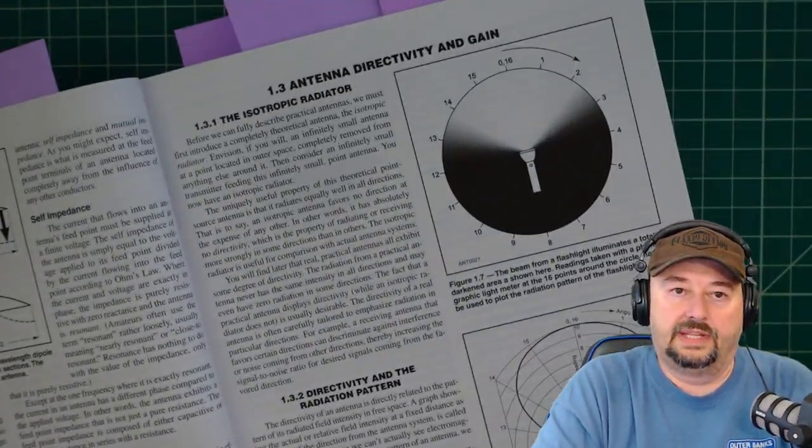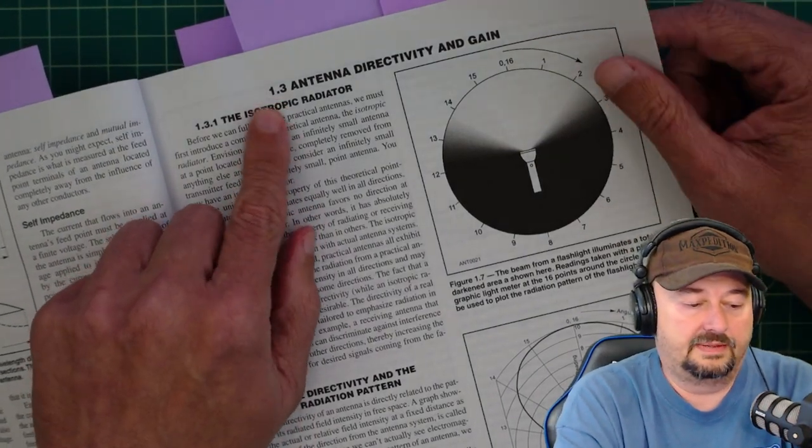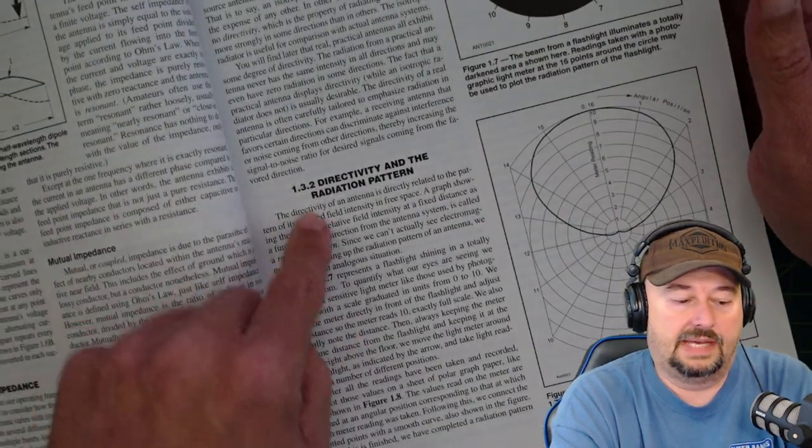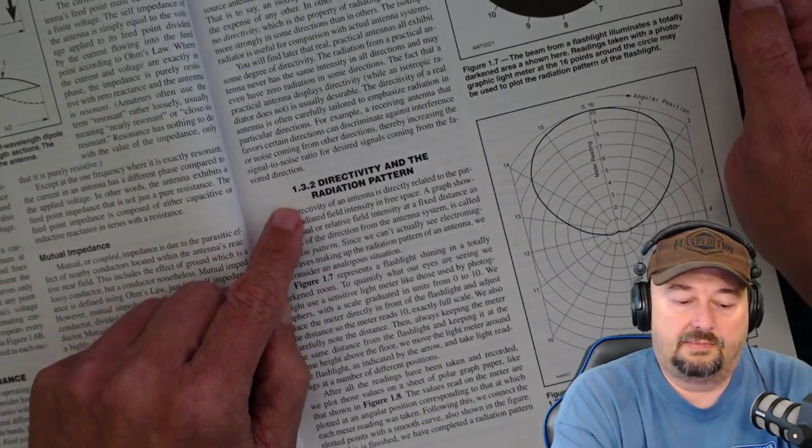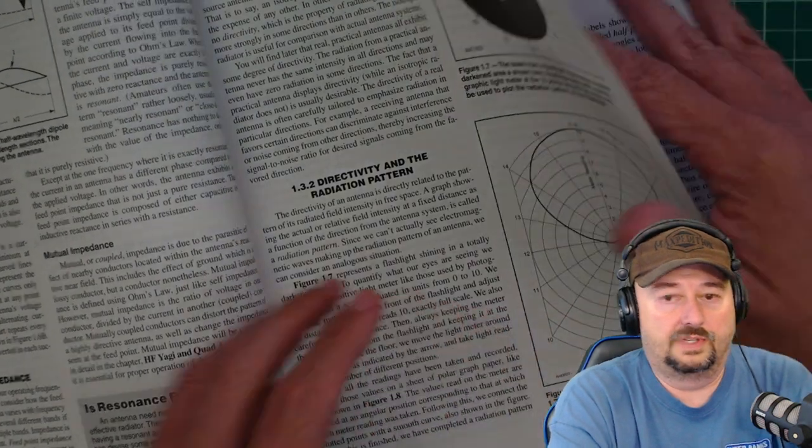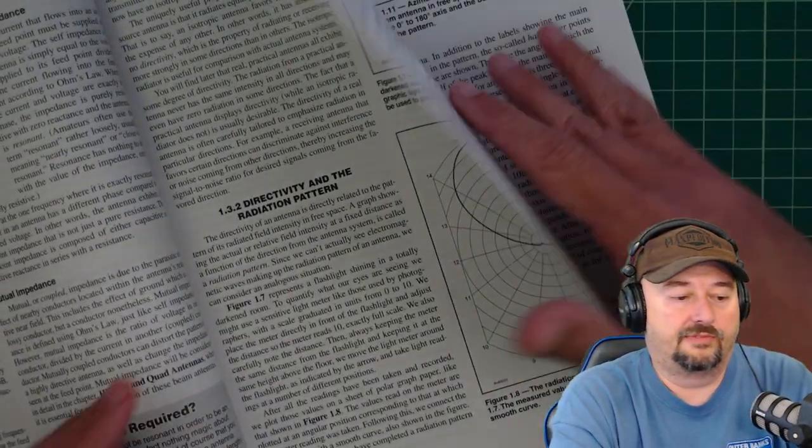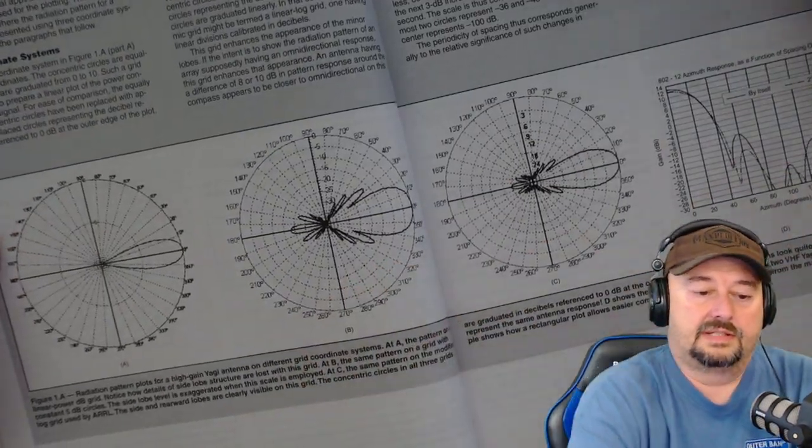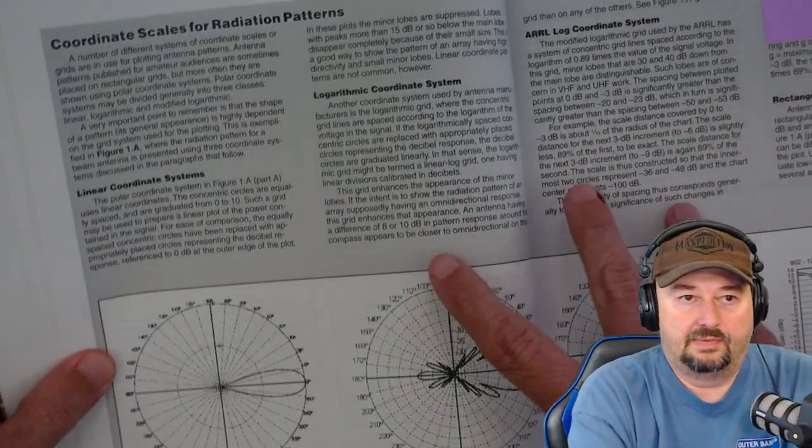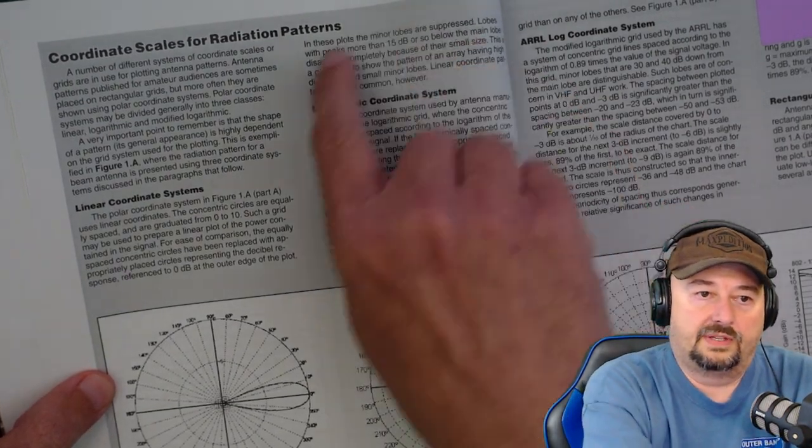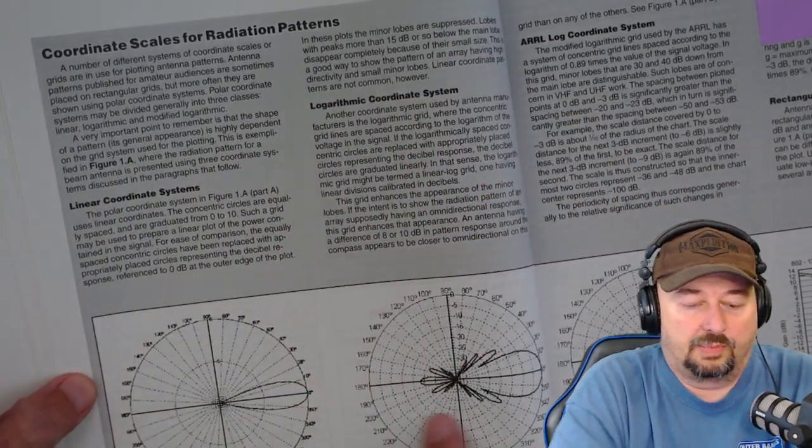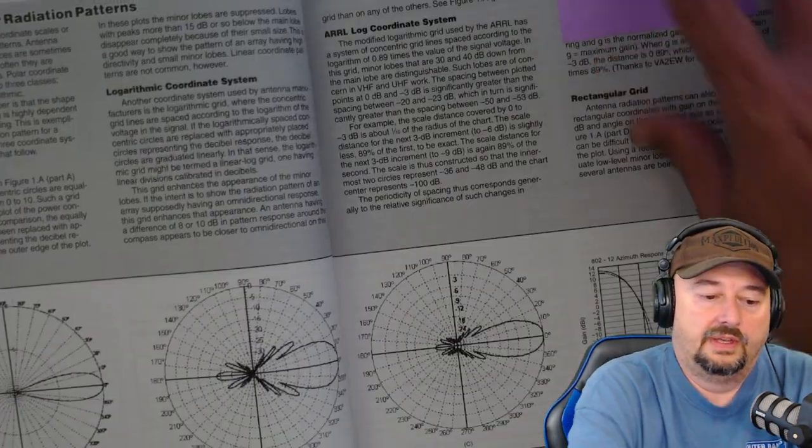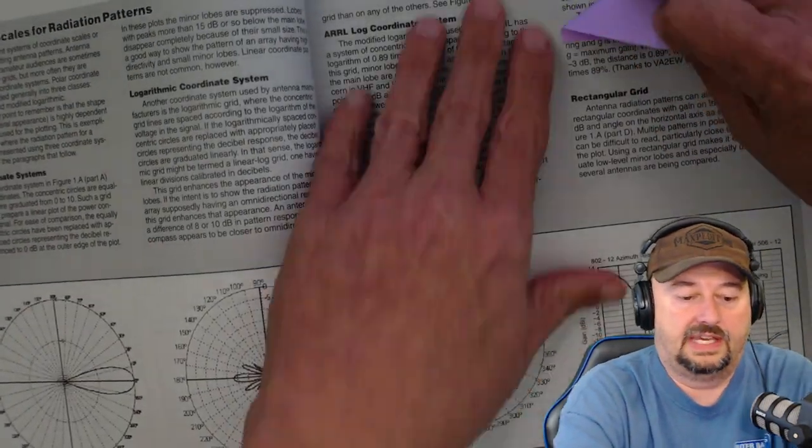And then there's a nice section on directivity and gain, and it talks about how you can look at radiation patterns and how to read them. So it's really, really good at learning about those types of things. It has these breakouts or call-outs where they talk a little bit about these polar plots that you can look at to understand how your antenna is actually going to perform. And it does a great job of educating you on those topics.